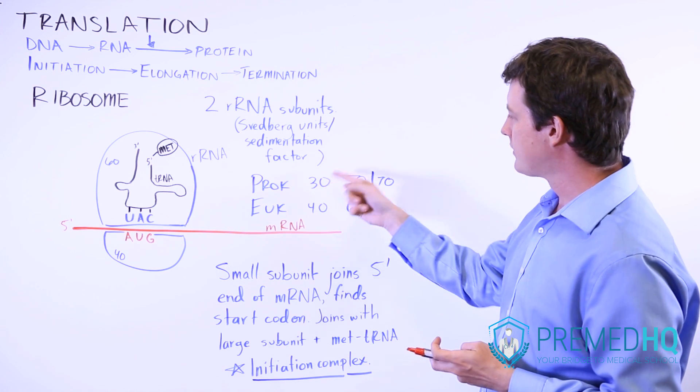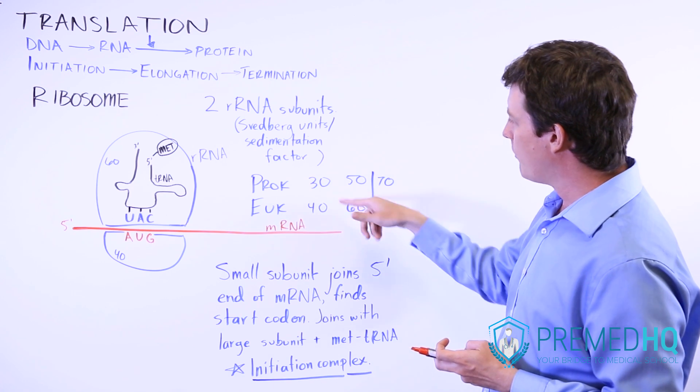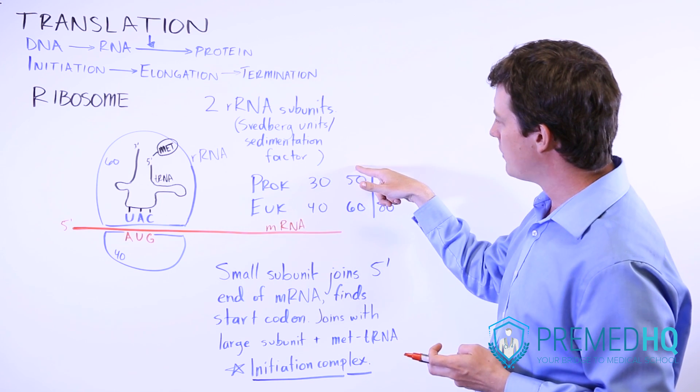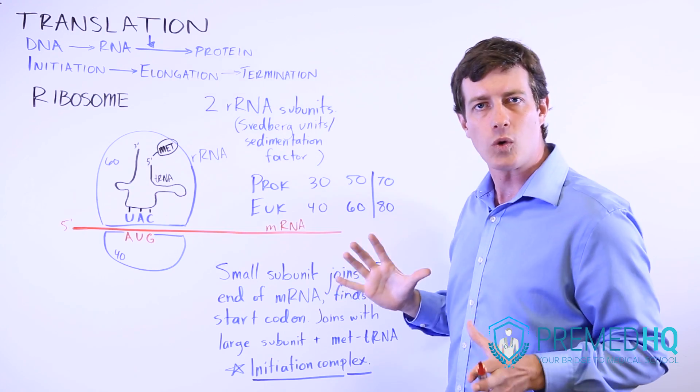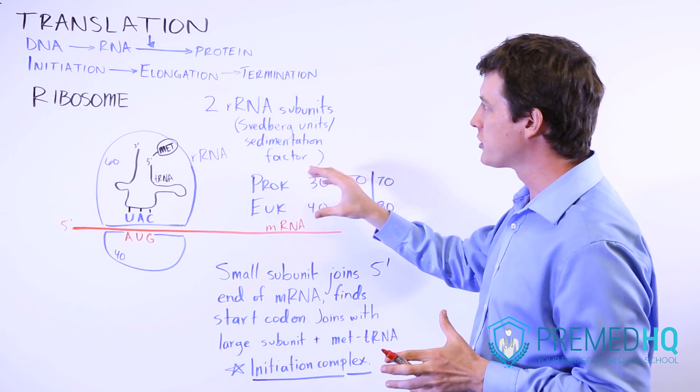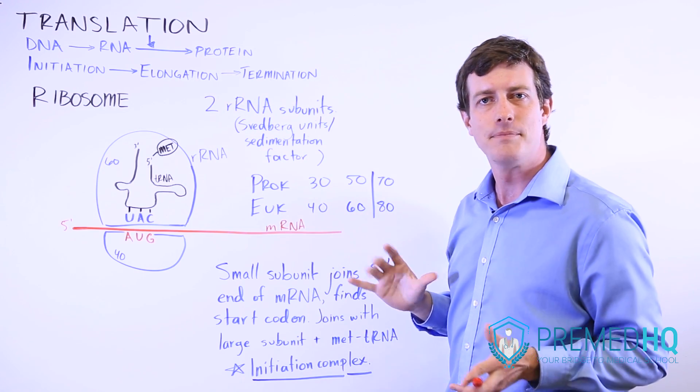But if you remember this chart here—30, 40, 50, 60, 70, 80—and remember that these are the two small subunits, and this is the size of the ribosome as a whole, then you'll be able to answer questions relating to the sizes of ribosomes and being able to identify them.